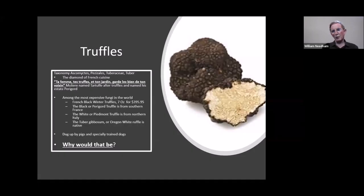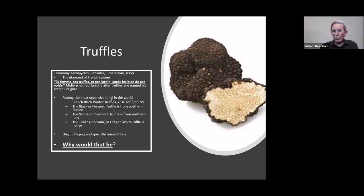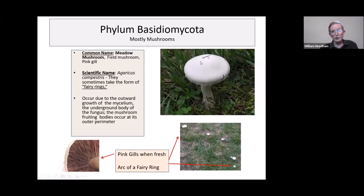This is the only other Ascomycete worth mentioning for food: truffles are fungi. They don't even come out of the ground, and they're probably the most well-known gourmet fungi, costing about $395 for seven ounces. Why are they so pungent? Because their way of spreading spores is to attract digging animals like pigs or dogs to find them, eat them, and then the spores exit through their alimentary canal into feces. That's how truffles spread their spores.